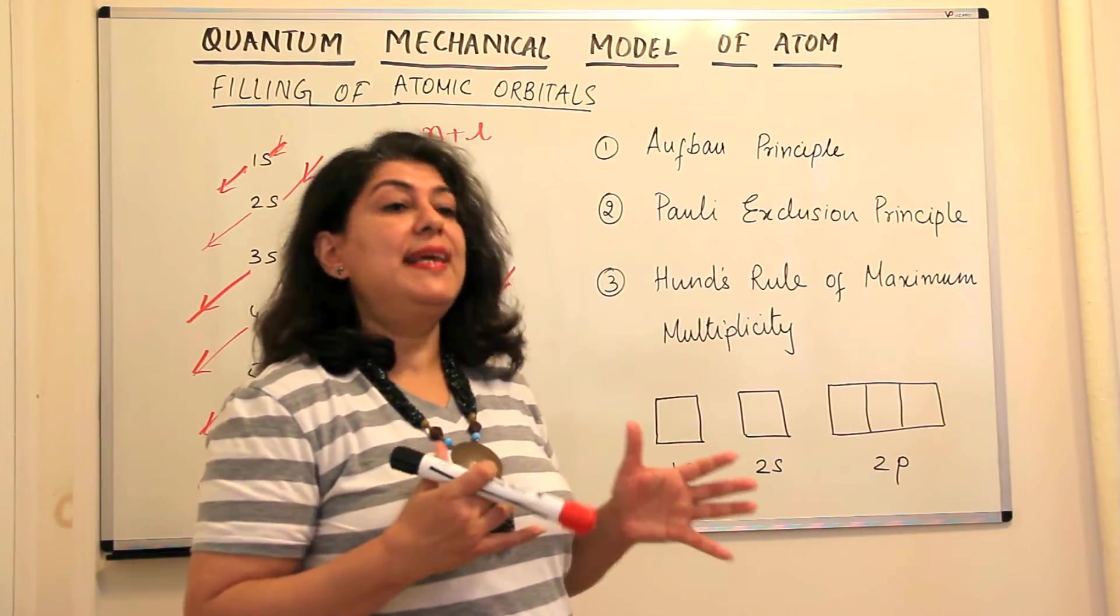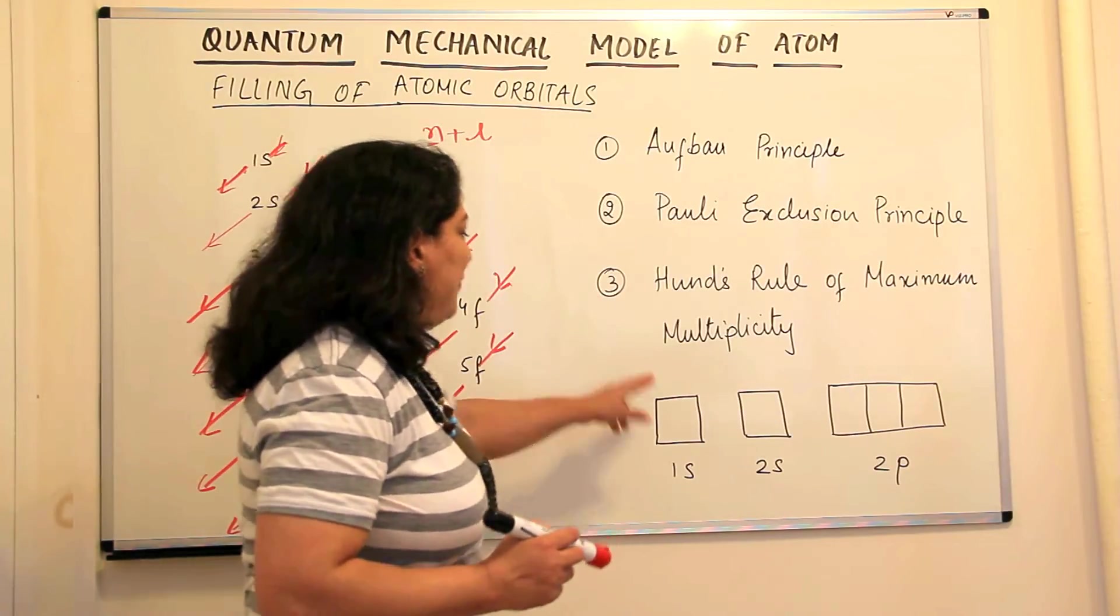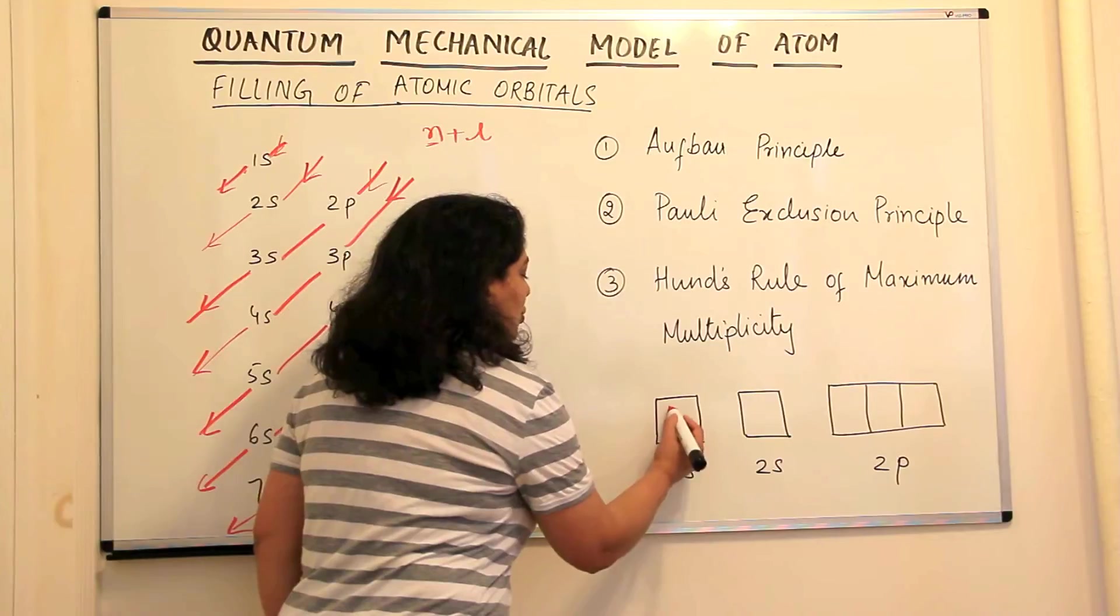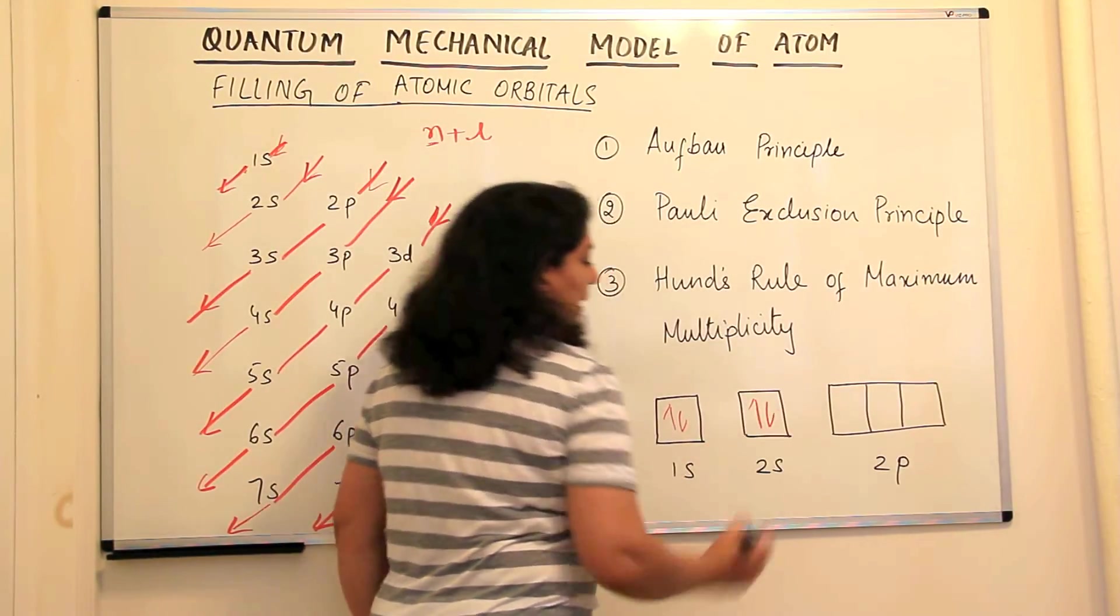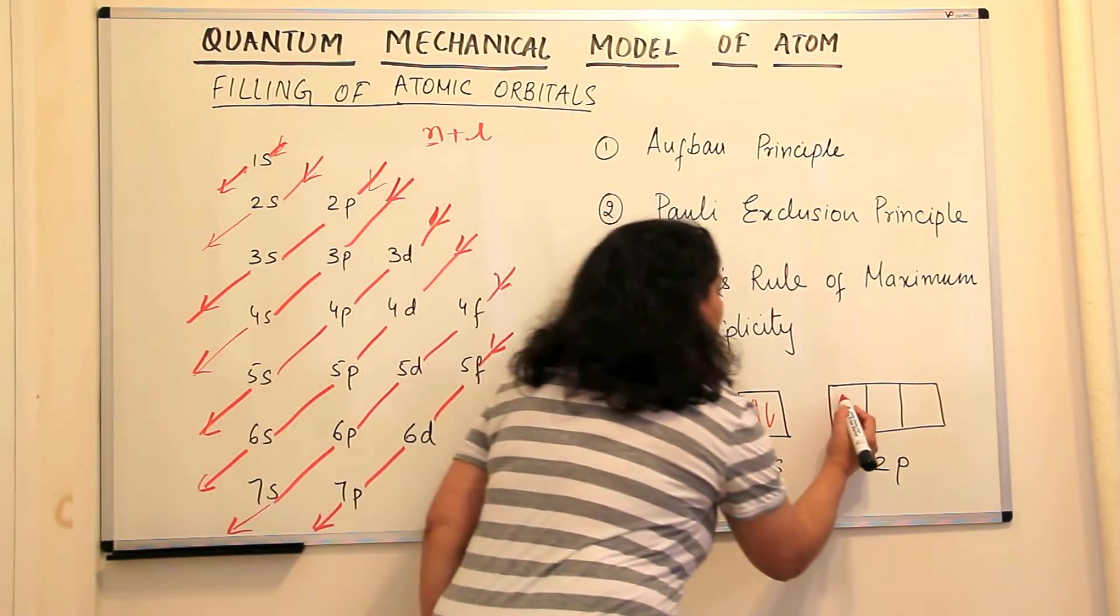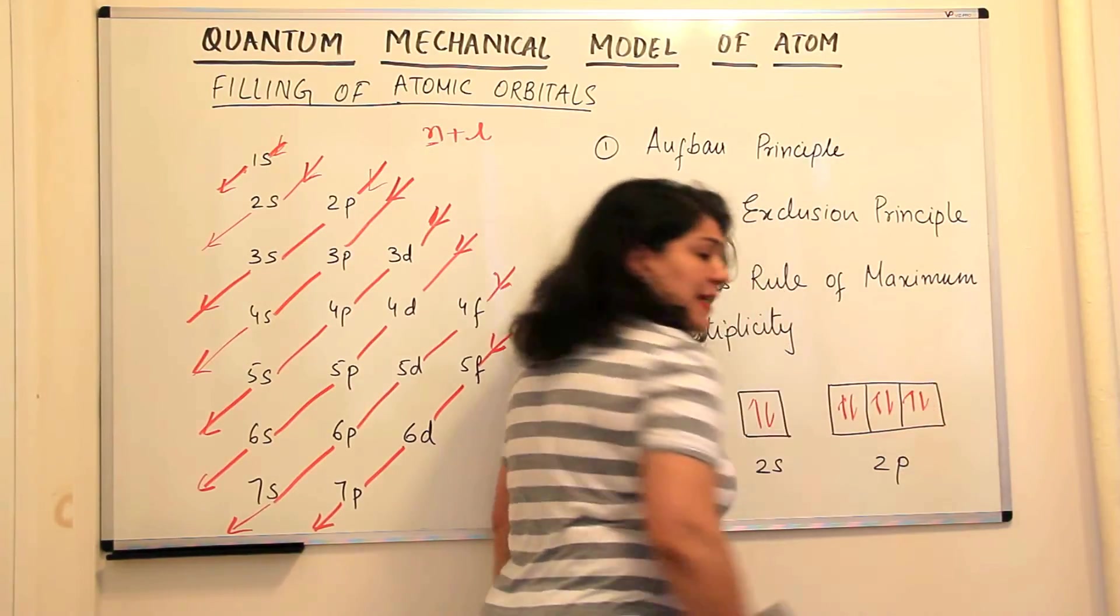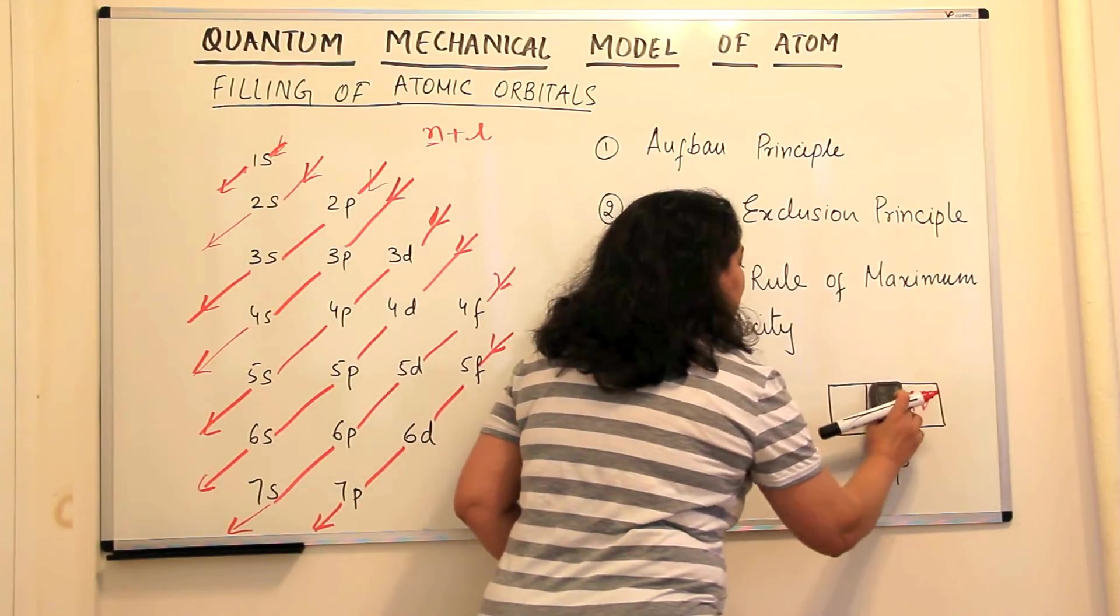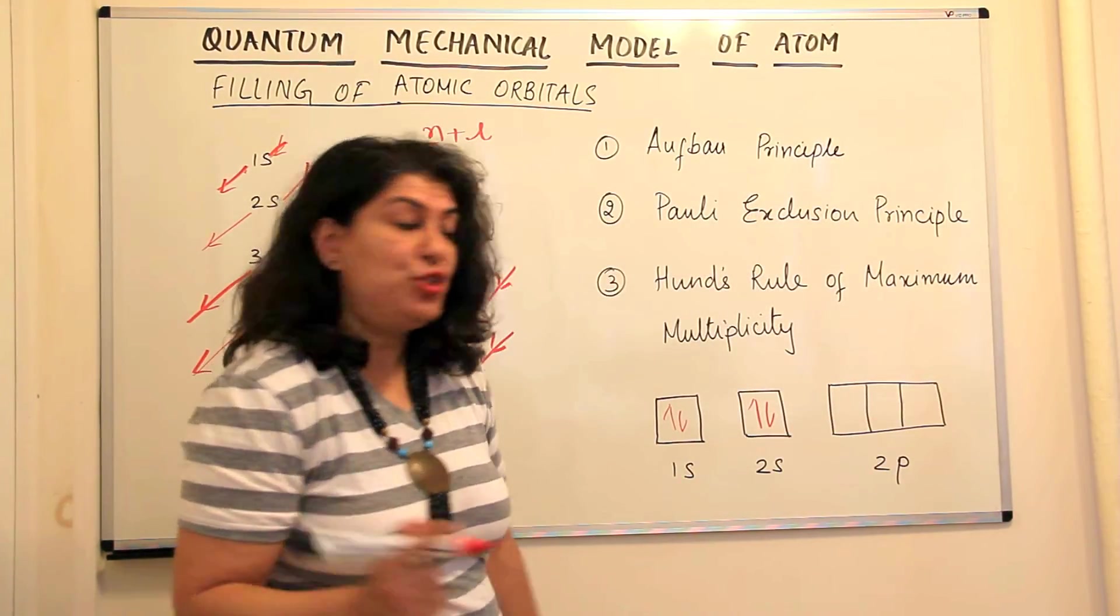So Hund's rule of maximum multiplicity says that if electrons are filling up, like we say, this is the lowest energy. So the first two electrons go here, the next two electrons go to 2s but when the electrons come to 2p, do they fill up 1, 2, 3, 4, 5, 6. Is this the sequence or is it something else? He said that when electrons come to such degenerate orbitals of a subshell,